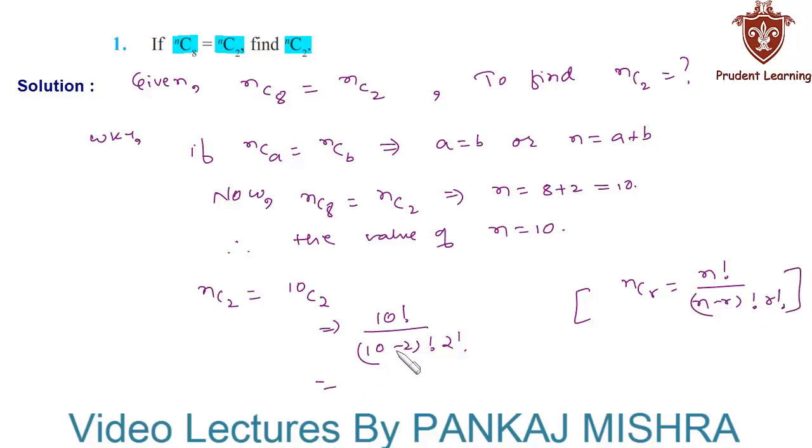So this can further be simplified as 10 factorial over 10 minus 2 is 8 factorial into 2 factorial. And now, 10 factorial can be written as 10 into 9 into 8 factorial, and keeping the denominator as such 8 factorial into 2 factorial.